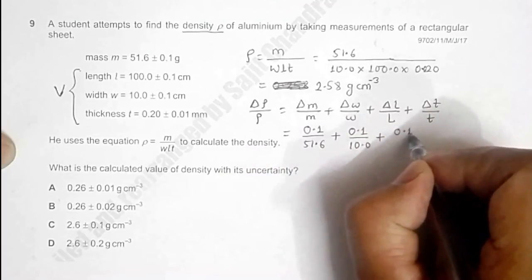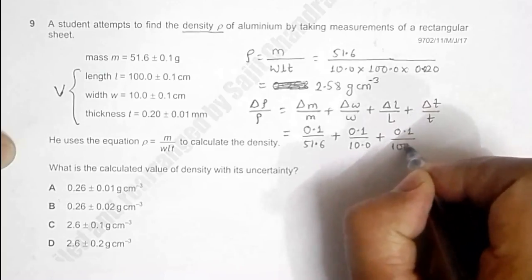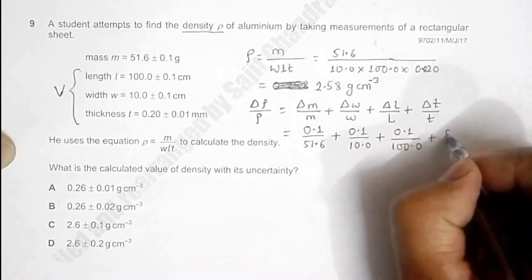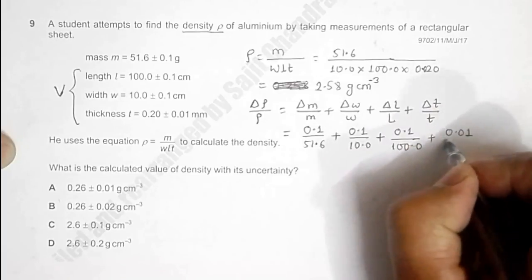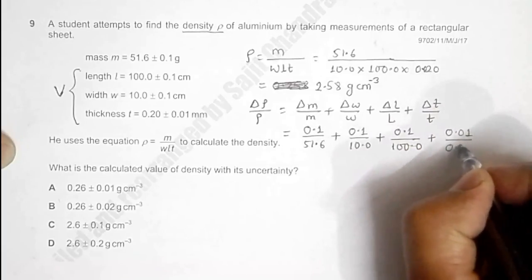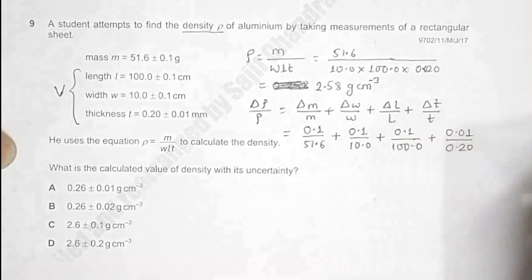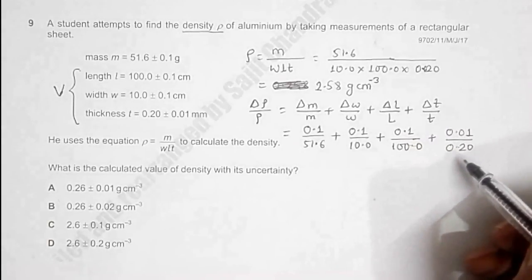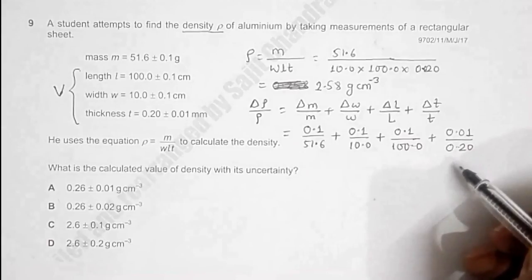ΔL/L is 0.1/100.0 plus ΔT/T is 0.01/0.20. Now since 0.01/0.20 is a ratio, we do not need to convert it into